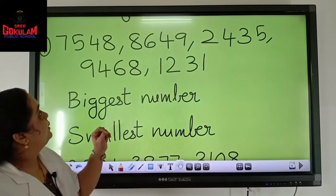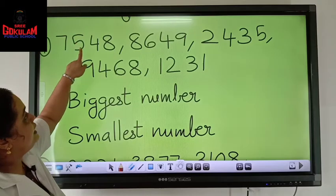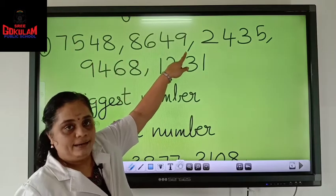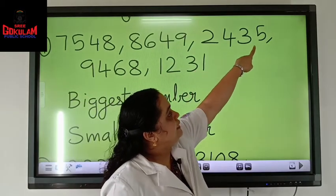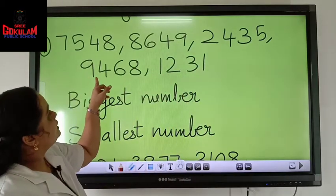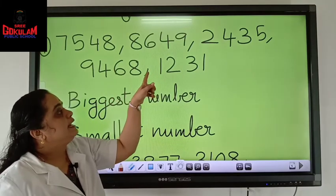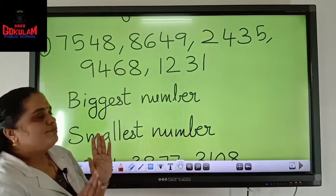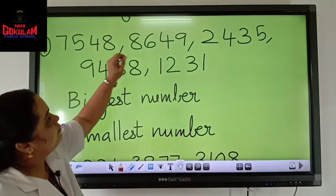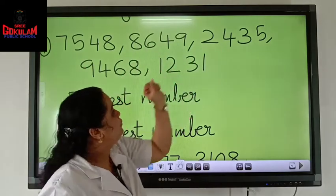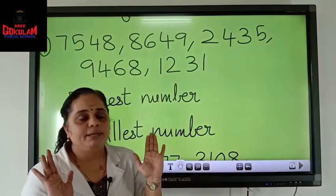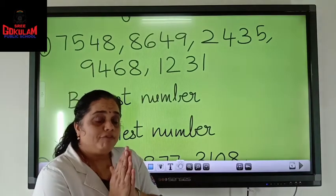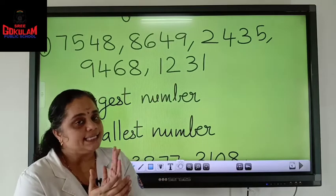Shall we do it? This is 7548, 8649, 2435, 9468, and 1231. First, count the number of digits. Here also we have 4, here also 4, here also 4, here also 4 digits and 4 digits. So every number is having 4 digits. Now let's count the thousands place first. If all thousands place digits are different, the answer is easily got.